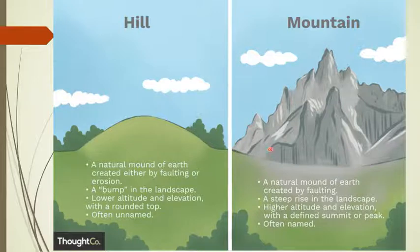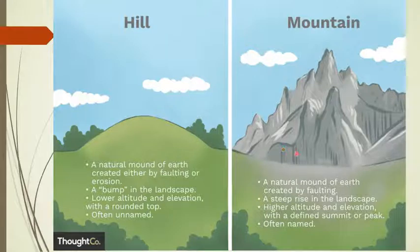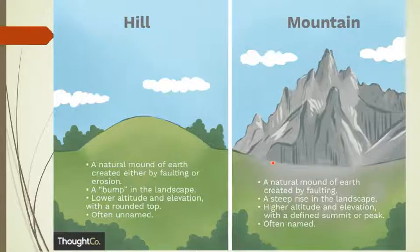On the right side we have the features of mountains. Number one: a natural mound of earth created by faulting — faulting is a process of mountain building because it is directly associated with the movement of plate tectonics. Number two: a steep rise in the landscape.